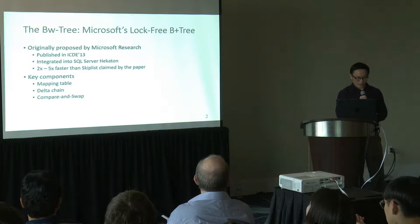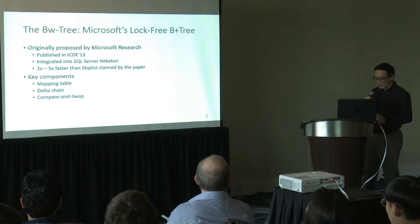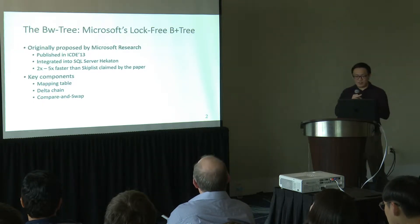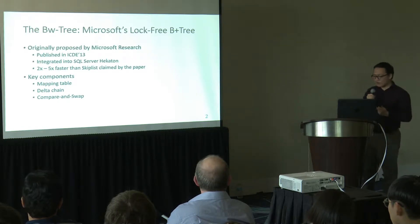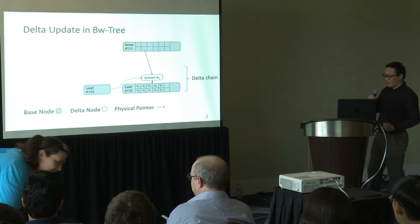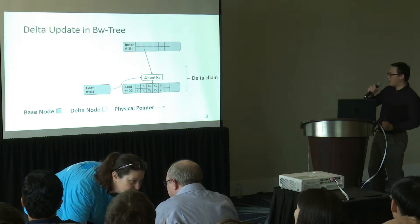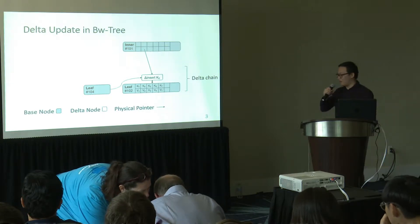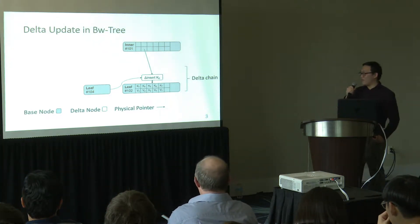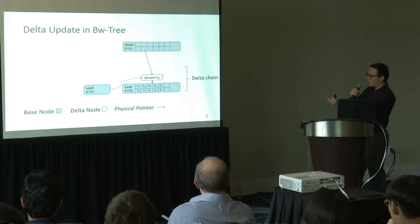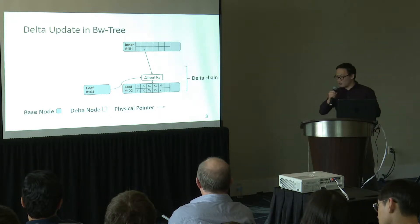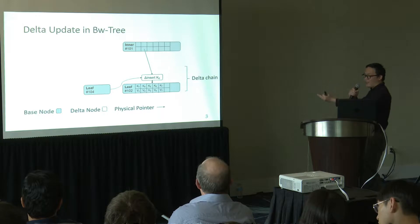There are three key components of the BW Tree that make it log-free: a mapping table that maps virtual node IDs to physical pointers, data chains that serve as a modification log of a base node, and compare-and-swap instructions that serialize worker threads. Here is an example of a simple BW Tree with three base nodes and one delta node. There are two kinds of nodes in general in BW Tree. Base nodes, whose background is gray, are just like regular B+ tree nodes with sorted key-value pairs stored directly in the node itself.